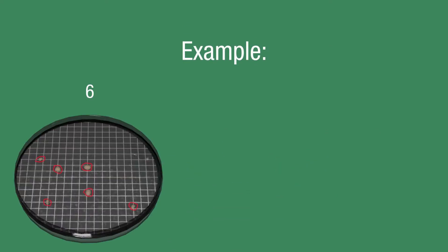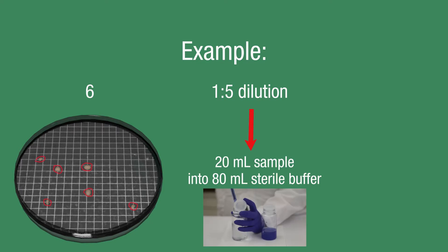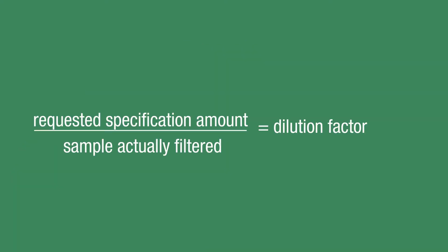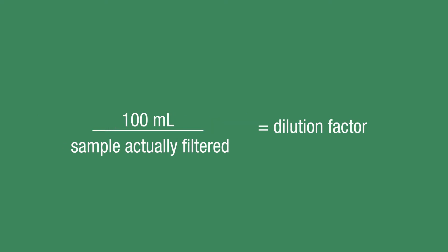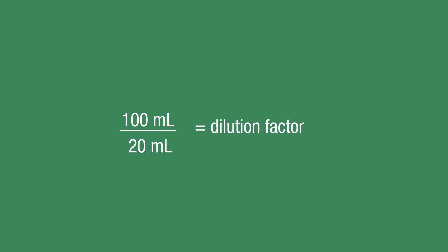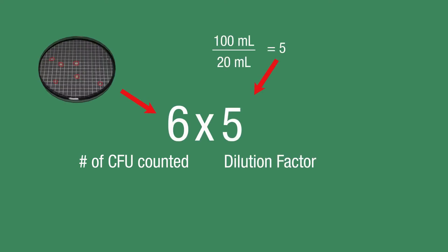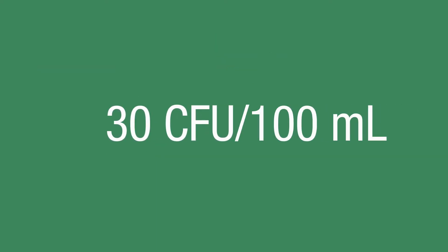6 colonies are counted from a 1 to 5 dilution — 20 milliliters of sample into 80 milliliters of sterile buffer. What is the reportable CFU per 100 milliliters? Requested specification amount, 100 milliliters, divided by amount of sample actually filtered, 20 milliliters, equals a dilution factor of 5. The number of CFU counted, 6, multiplied by the dilution factor, 5, equals 30 CFU. Report as 30 CFU per 100 milliliters.